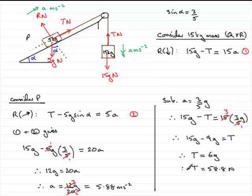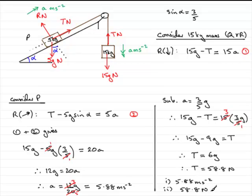So in part one they wanted the acceleration, which is 5.88 metres per second per second. In part two they wanted the tension in the string, which is 58.8 newtons. That brings us to the end of the first part of this question.